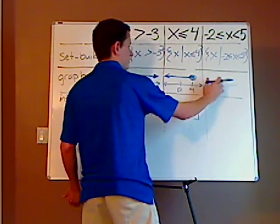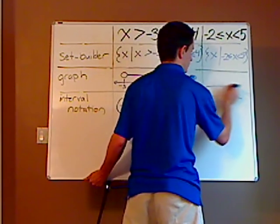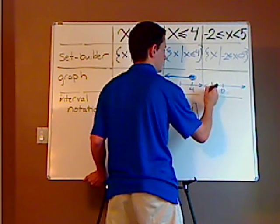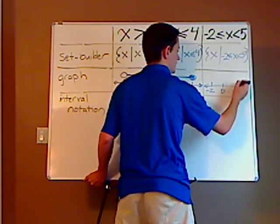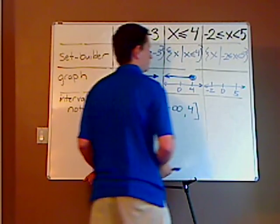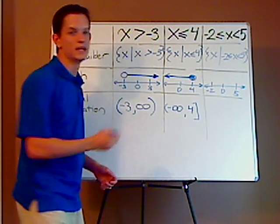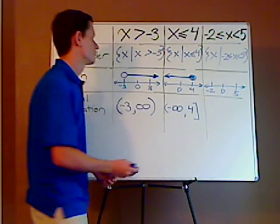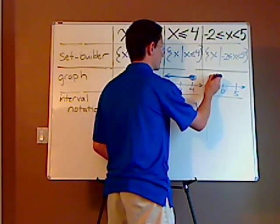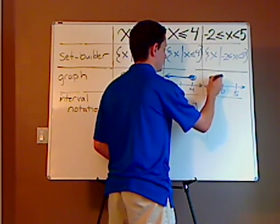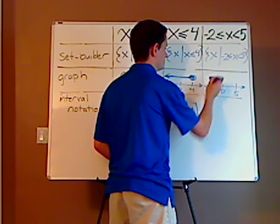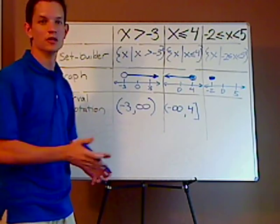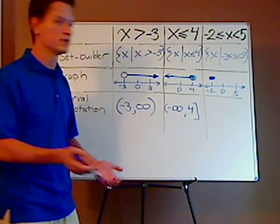So with the graph, again, draw your number line, put zero in there, and now I have negative two and positive five. Now, with the negative two, it's less than or equal to, so I know that is going to be, well sorry, it's going to be a closed circle, and the other guy with the five, it's going to be an open circle because there's no or equal to.